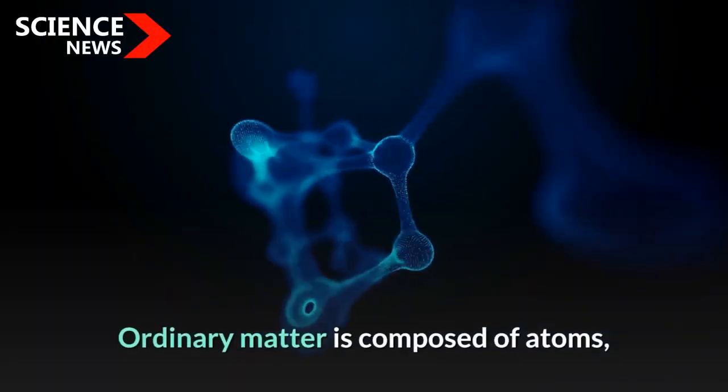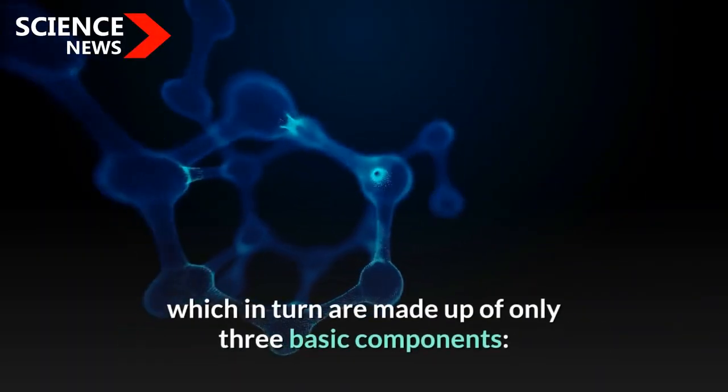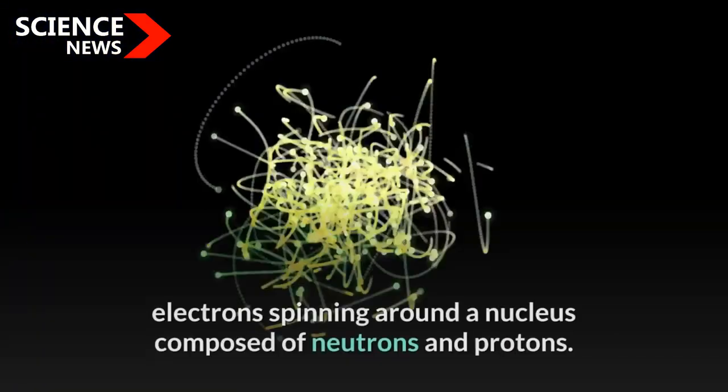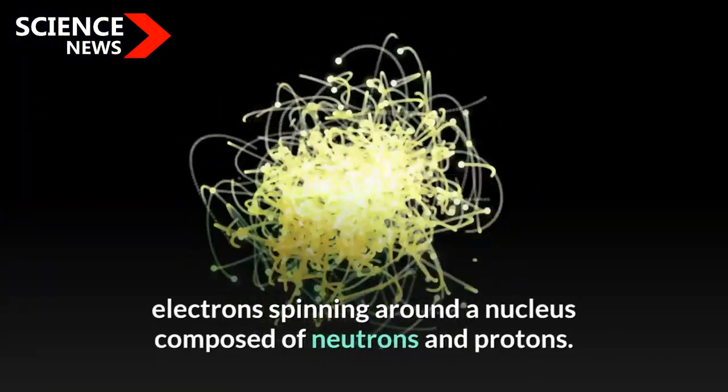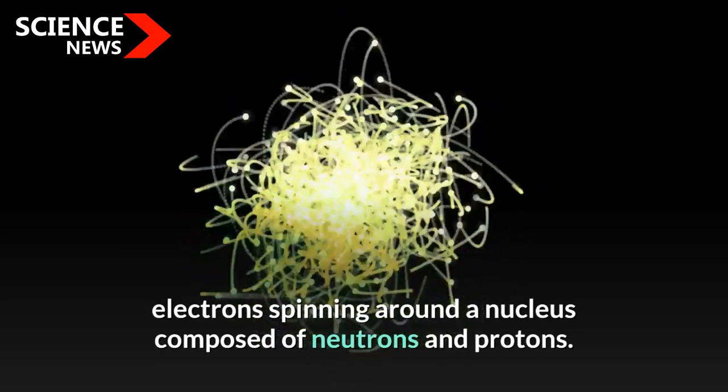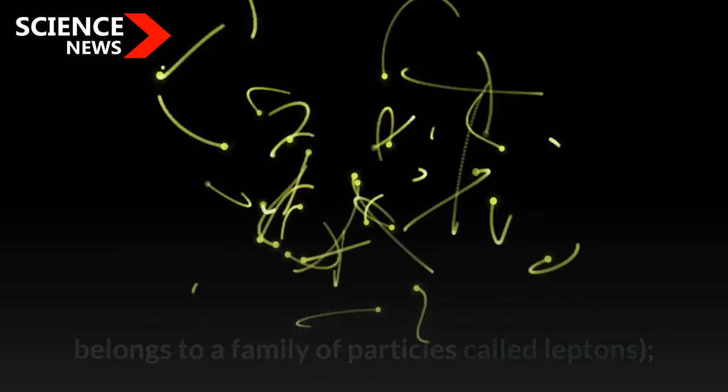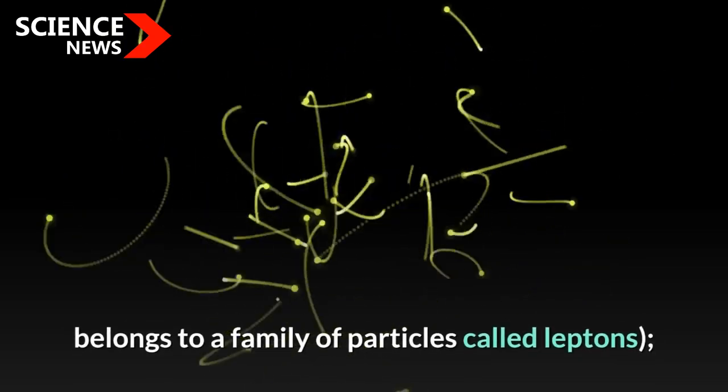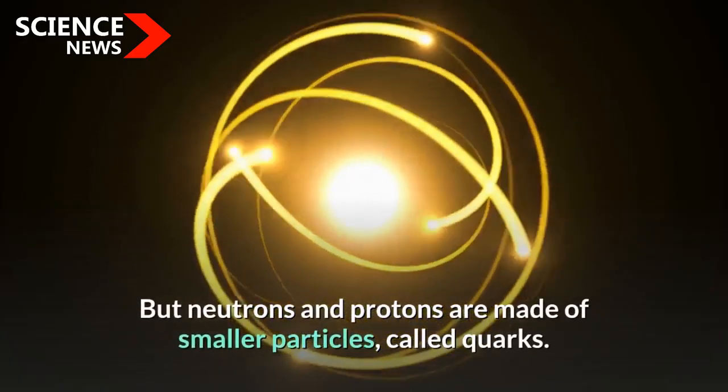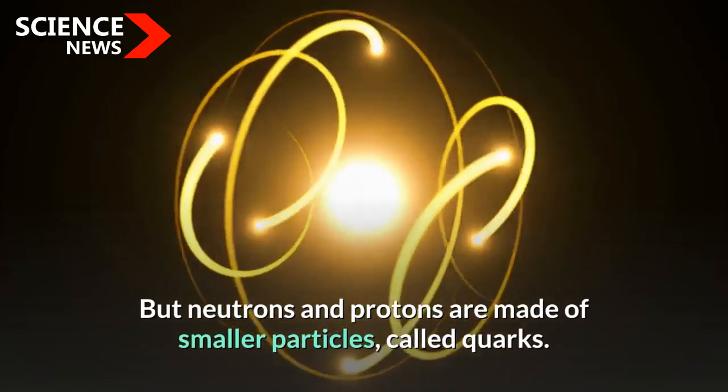Ordinary matter is composed of atoms, which in turn are made up of only three basic components: electrons spinning around a nucleus composed of neutrons and protons. The electron is really a fundamental particle. It belongs to a family of particles called leptons, but neutrons and protons are made of smaller particles called quarks.